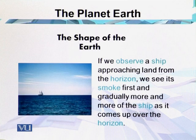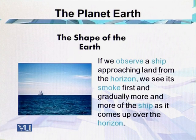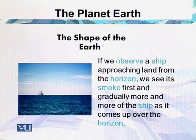The second evidence: if we observe a ship approaching land from the horizon, we see its smoke first, and gradually more and more of the ship becomes visible as it comes up over the horizon. This is one of the evidences of the shape of the planet.